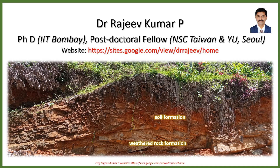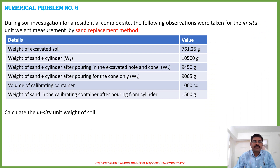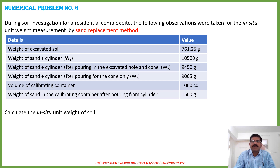Let us move to the numerical problem. During a site investigation for a residential building complex, observations were taken for unit weight measurement by the sand replacement method. The given data: weight of excavated soil = 761.25 g; W1 (sand + cylinder) = 10,500 g; W2 (sand + cylinder after pouring into hole and cone) = 9,450 g; W3 (sand + cylinder after pouring for cone only) = 9,500 g; volume of calibrating container = 1000 cc; weight of sand in calibrating container after pouring = 1,500 g. We are asked to calculate in-situ unit weight of soil.